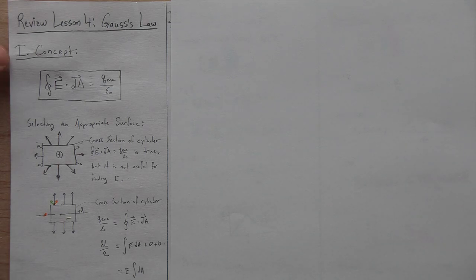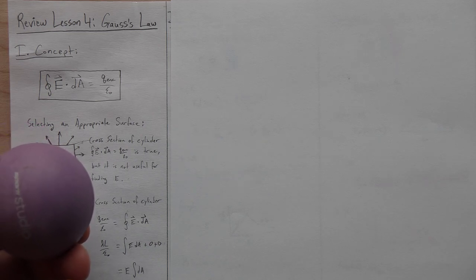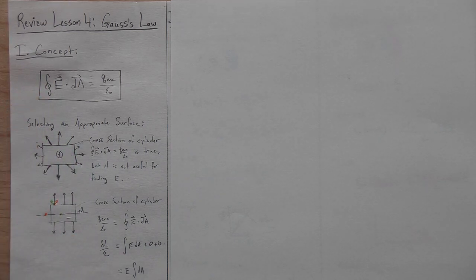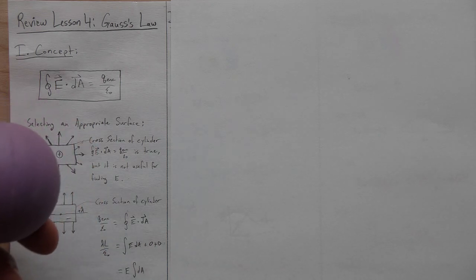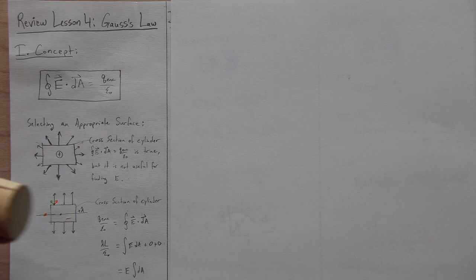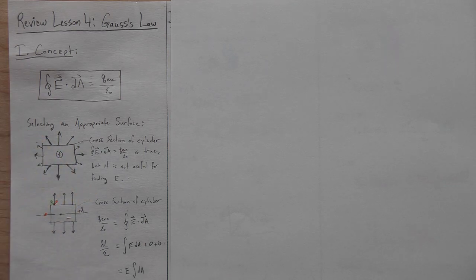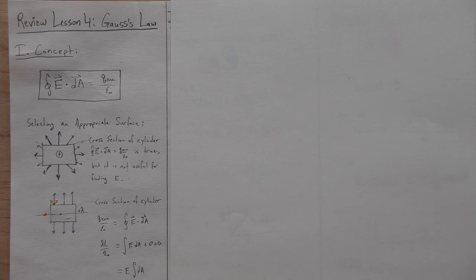You have to pick a closed surface — that's what the circle in the integral means. For example, a sphere: you can't get to the center without poking a hole through that surface. It's not like a circle cut from paper — it has to be closed in, blocking off some space from the rest of the universe. It could be a cylinder or a box or any other shape. However, we can't just pick any shape when using Gauss's Law to solve problems — we have to pick a shape that makes sense for the particular geometry.